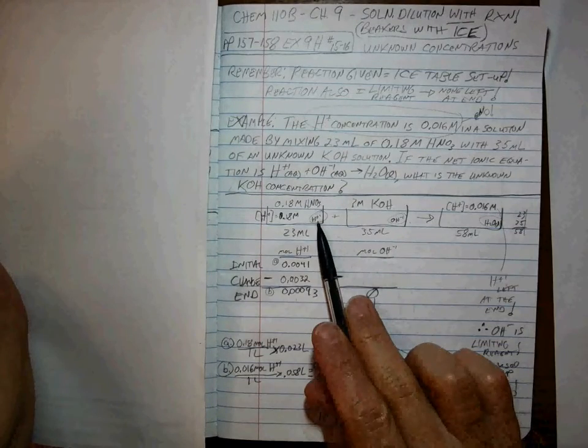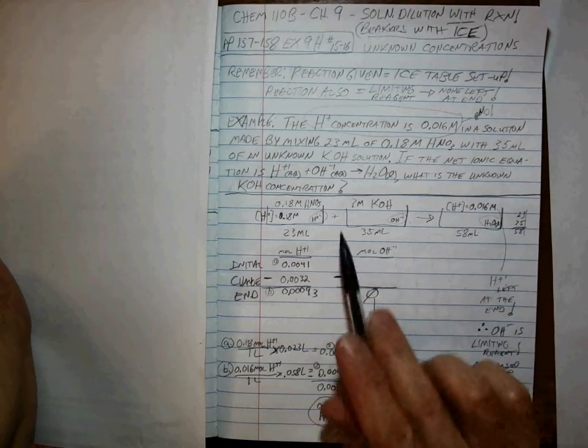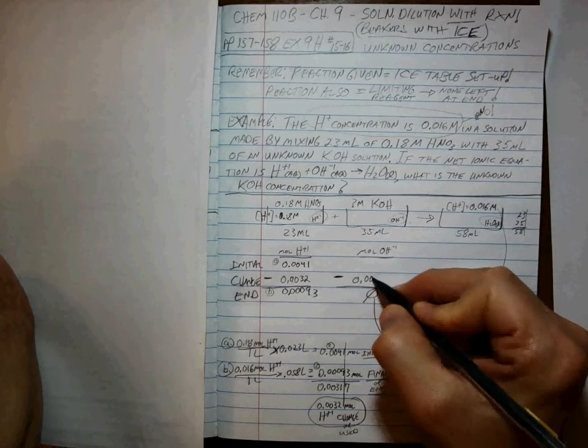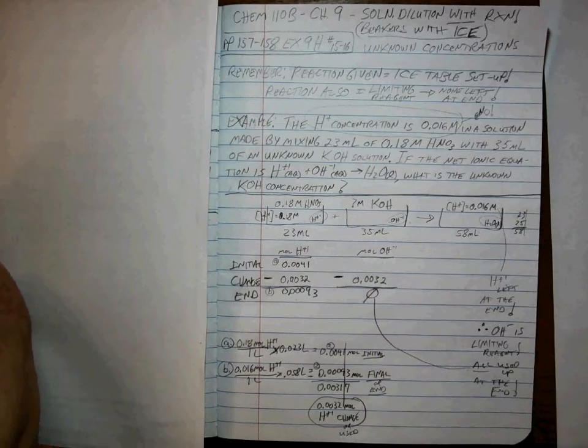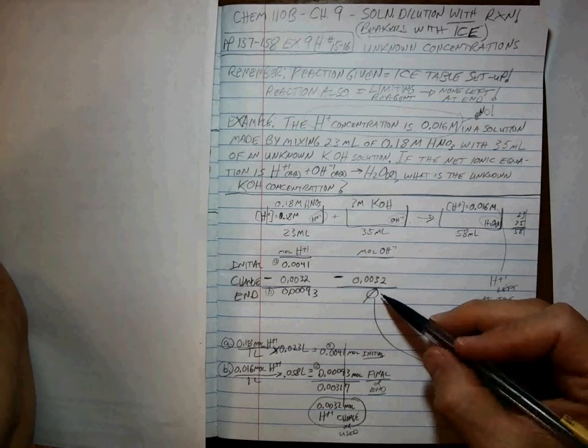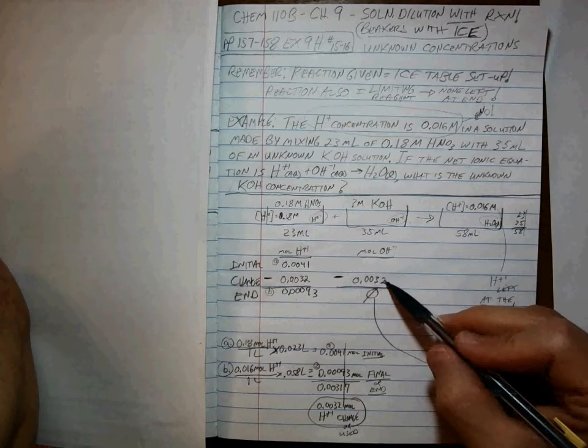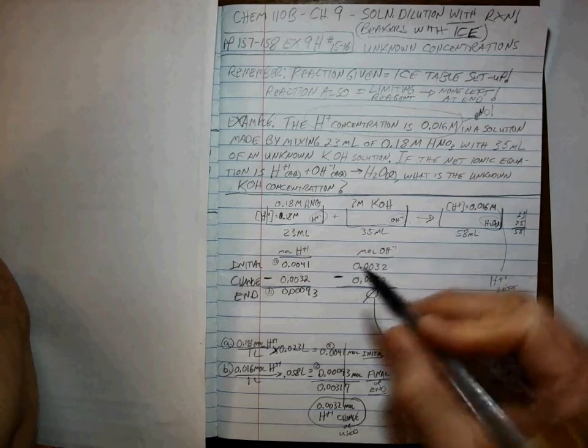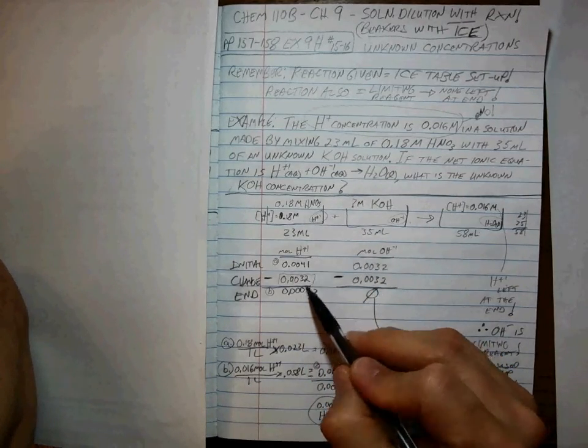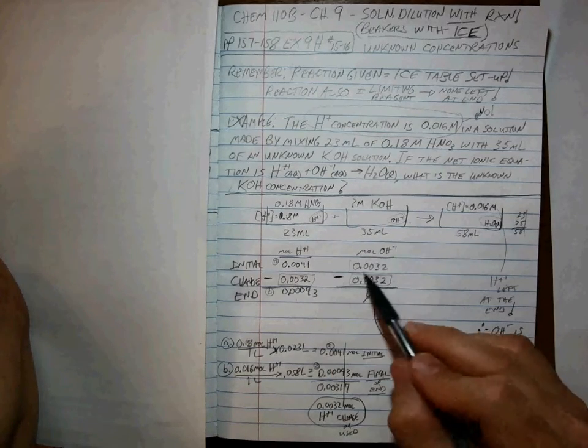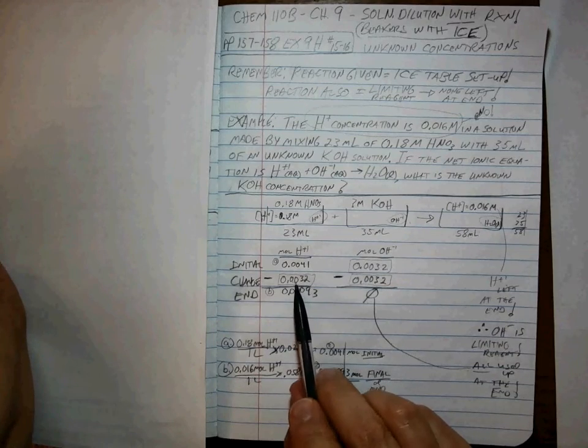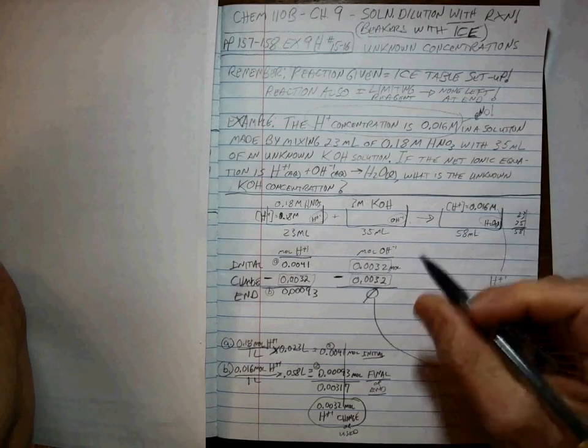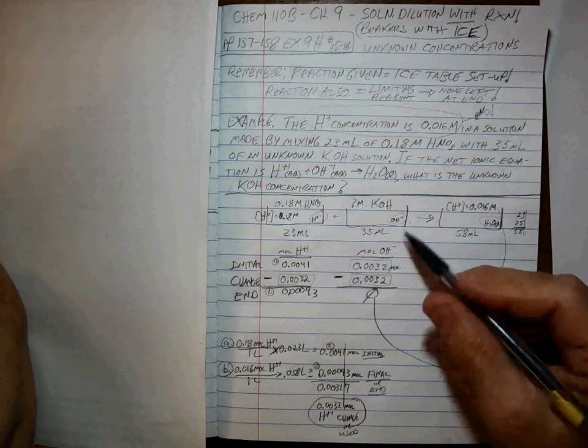Does that make sense? If you started with this much and you ended with that much, that much got used up. So 0.0032 goes right there in the change. It's a one to one ratio, and if it's a one to one ratio and you used up 32 sticks, you used up 32 candies with the lollipop. If you used up 0.0032 and you end up with none at the end, you know exactly how much you started with. This is just a logic exercise.